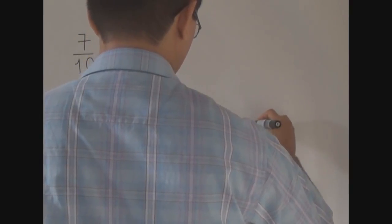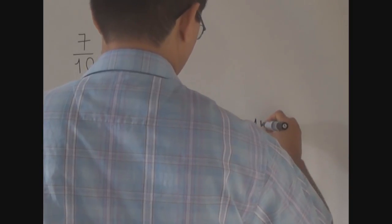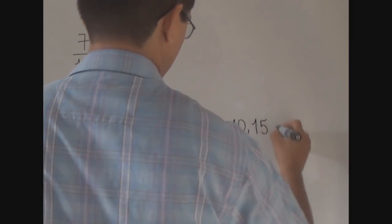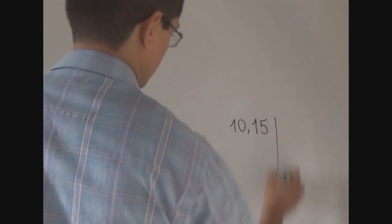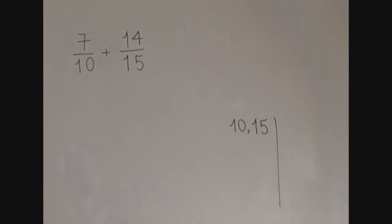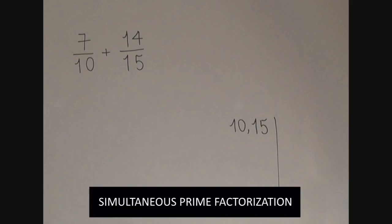We write 10, use a comma just to separate it from the 15. We draw a vertical line on the right, as you can see. And we will start calculating the LCM by doing what we call simultaneous prime factorization. How do we start?